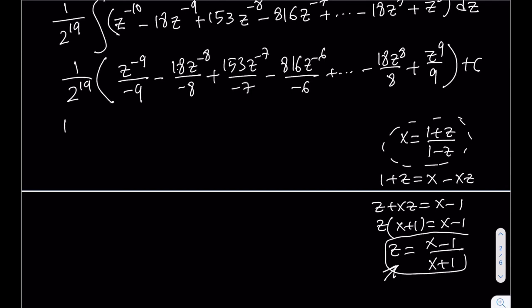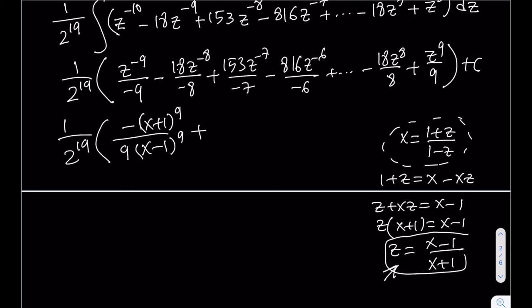To illustrate: the first term -1/(9z^9) becomes -1/[9·((x-1)/(x+1))^9] = -(x+1)^9 / [9·(x-1)^9]. You replace all z's with (x-1)/(x+1) to get the complete solution in terms of x. This is the approach I really like. Please comment below with your thoughts or any alternative methods — thanks for watching, and see you in the next video!